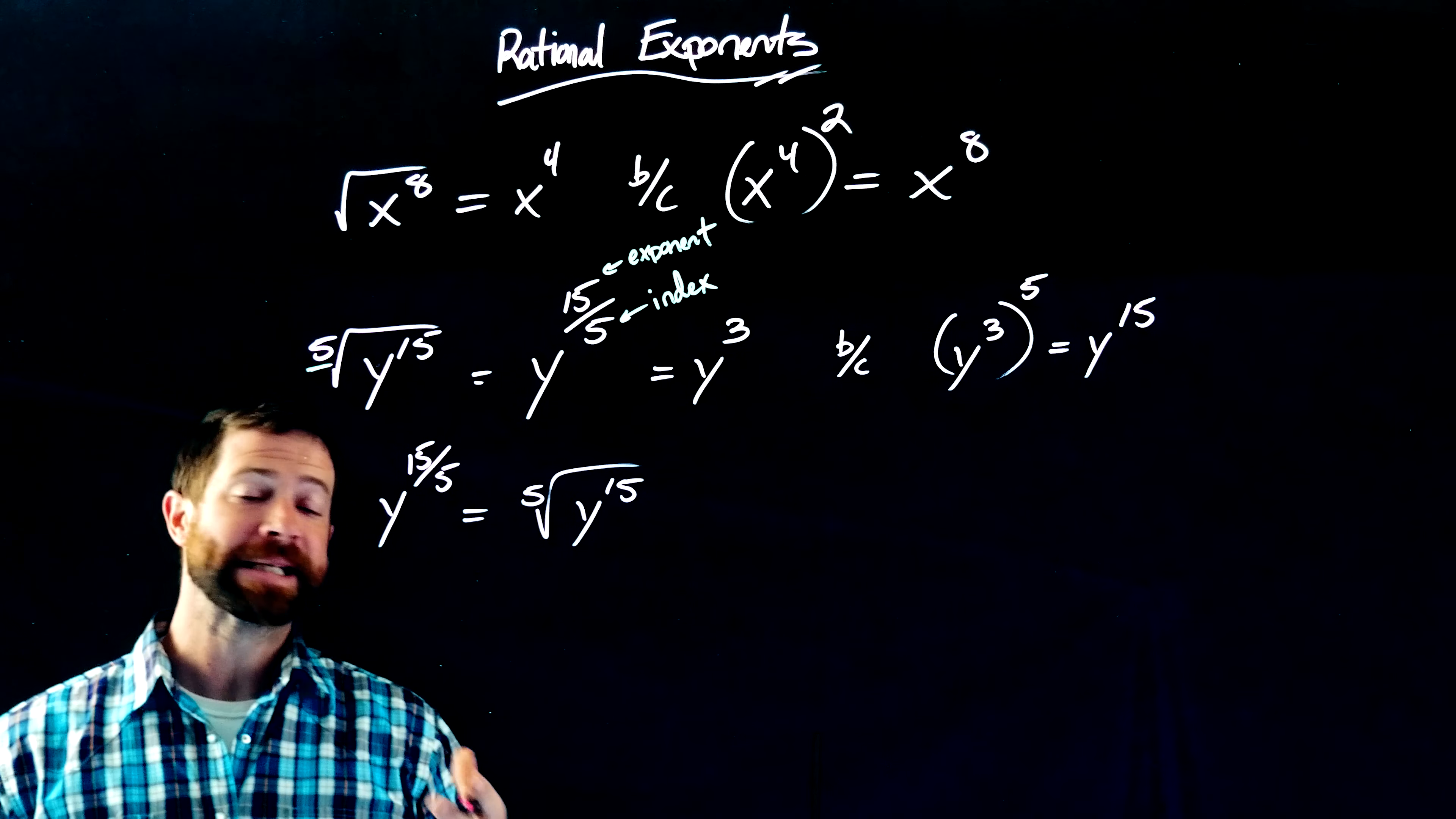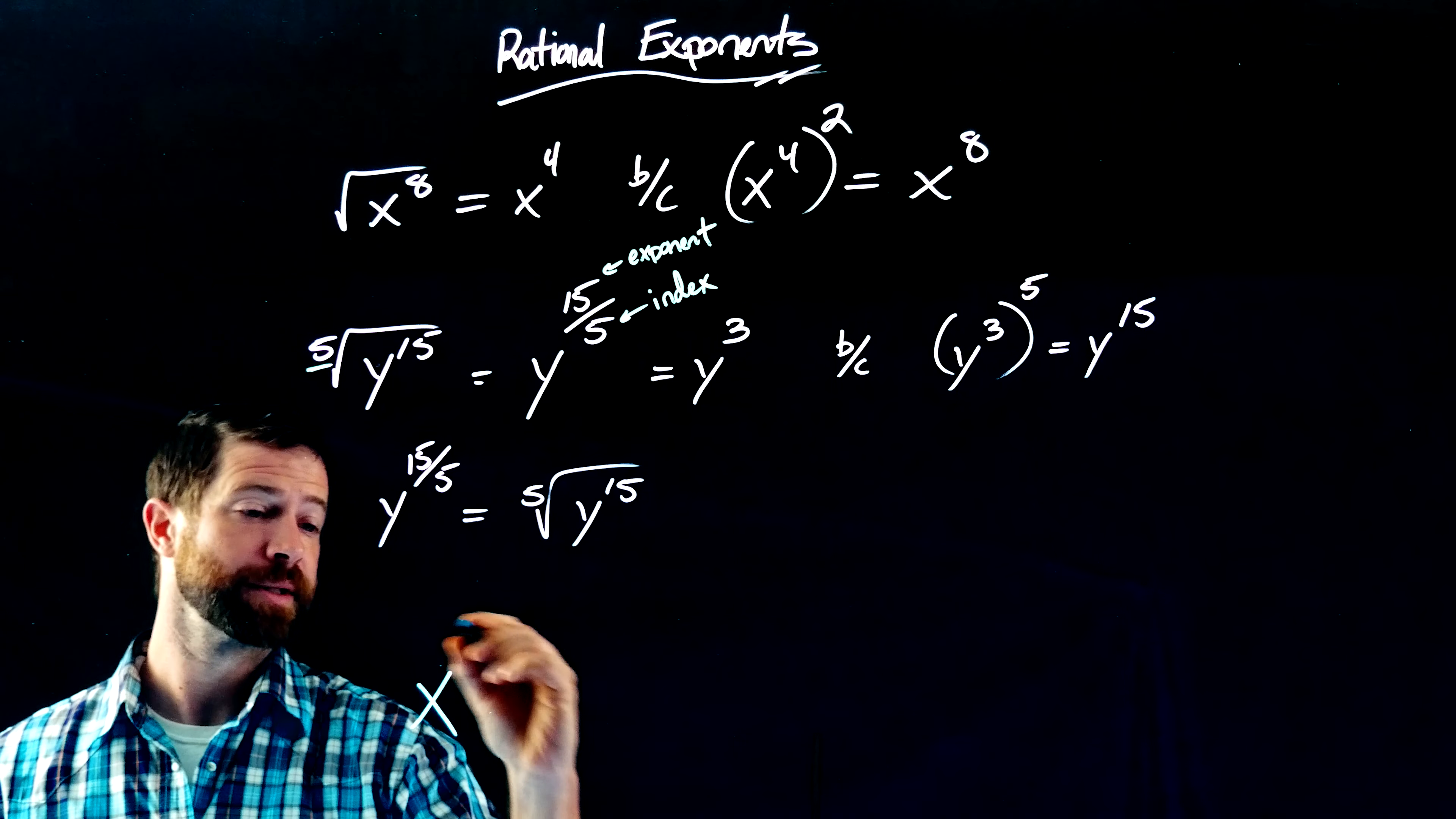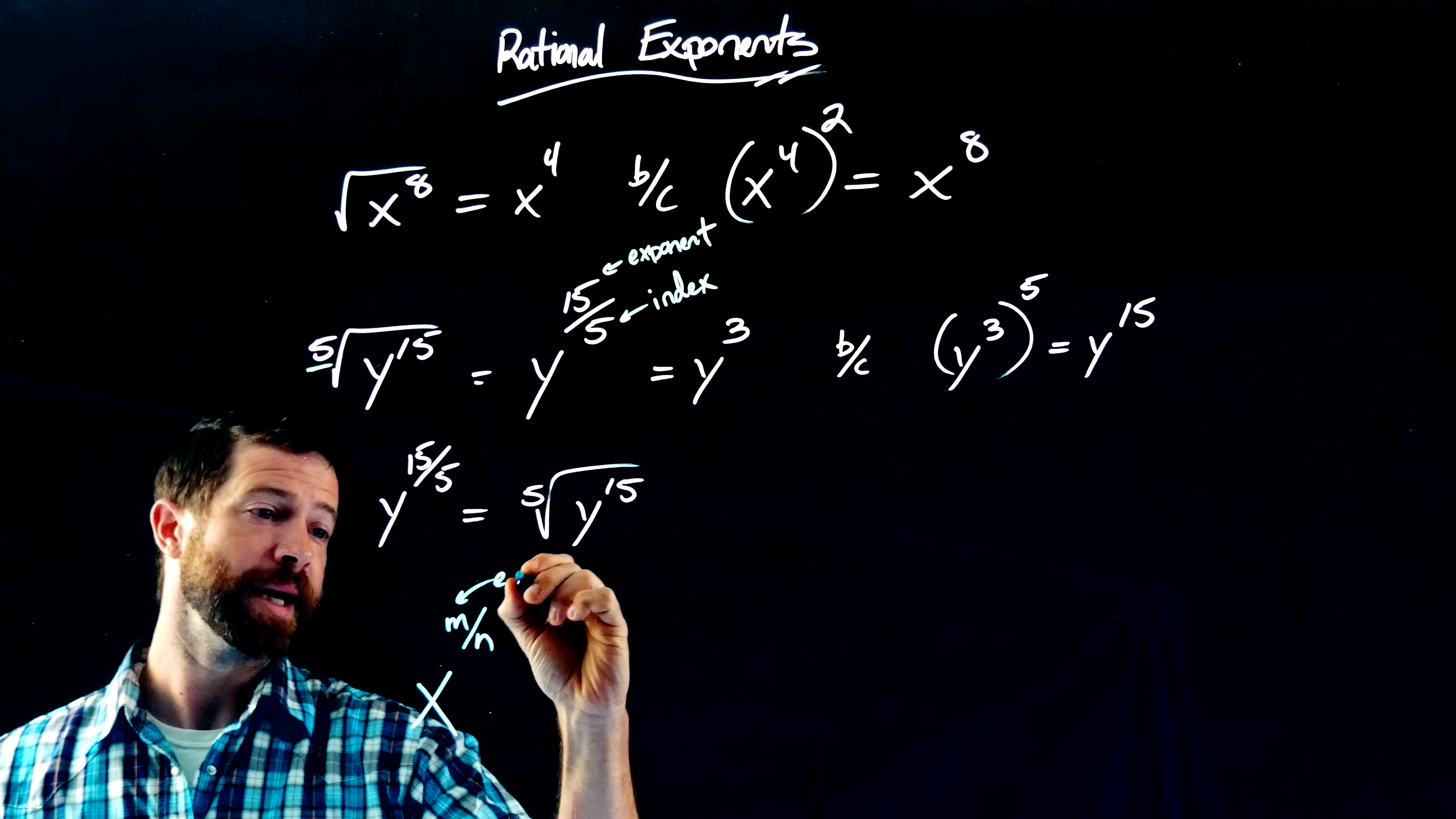And in fact, this is our general rule for dealing with exponents. The general rule for dealing with fractional exponents is, if I have x to the m over n, the m right here will be the exponent,